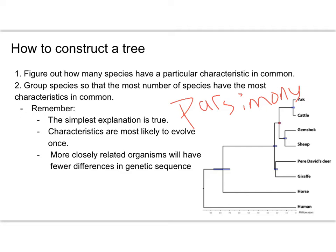For instance, the tree on the right here. You have the yak, cattle, sheep, the giraffe, horse, human. Human would be our outgroup, the least related to all of those. We can see how it's totally separate from the rest of those organisms. In building this tree, they would have been looking for particular characteristics that they all had in common, and then grouping them so that they have the most characteristics in common, so that we get that simplest explanation.